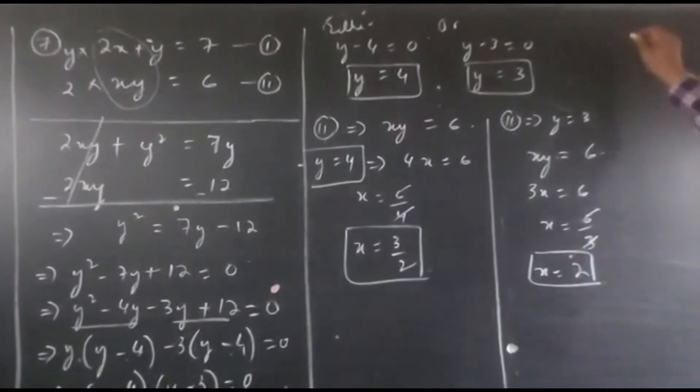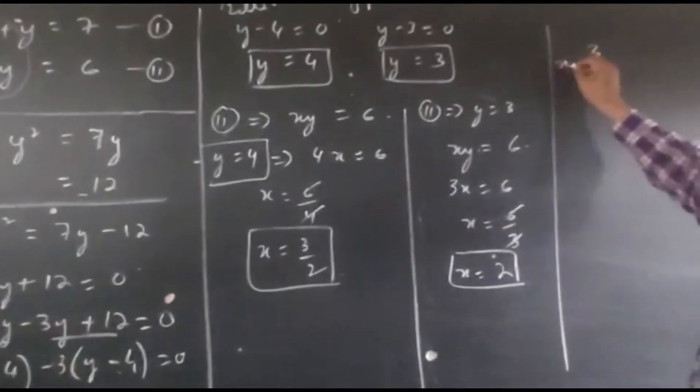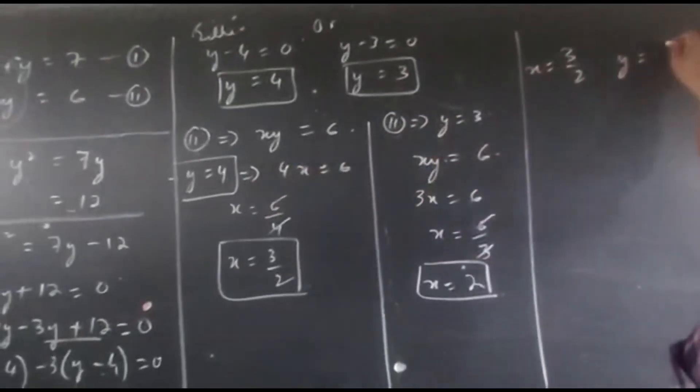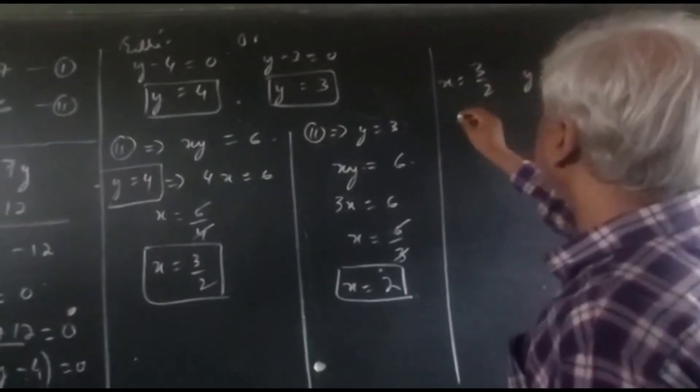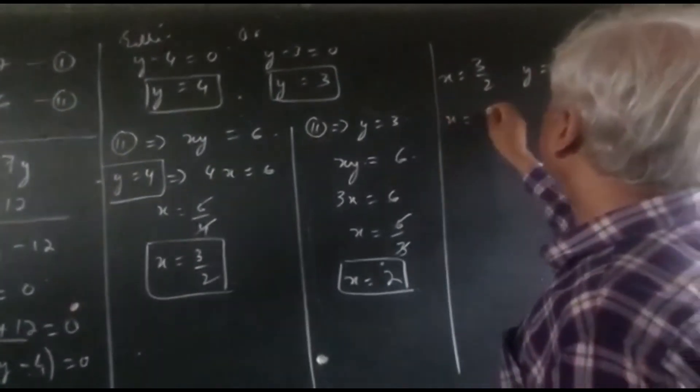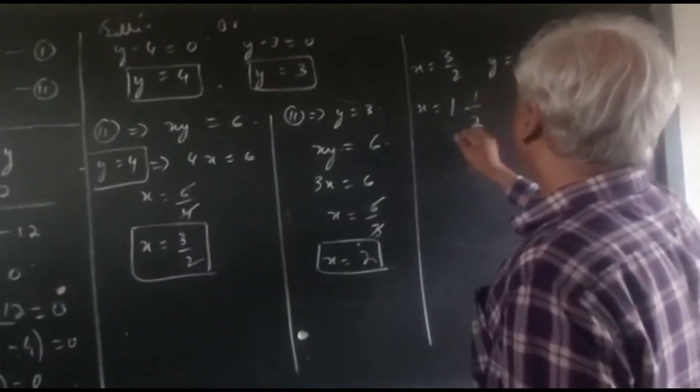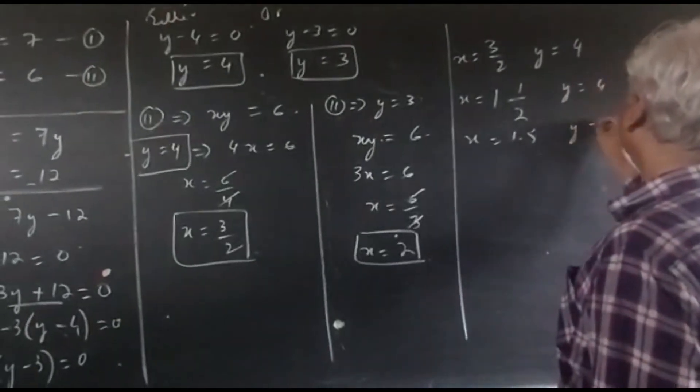So our answer will be when x equals 3 upon 2, y equals 4. The 3 upon 2 can also be written down in decimals if you want, like for example, in decimal form, 1.5. They are all accepted. And y equals 4.